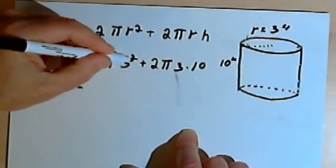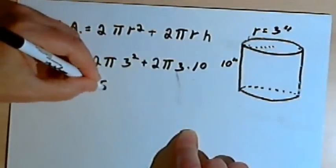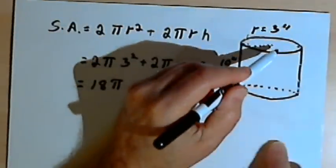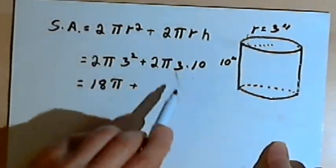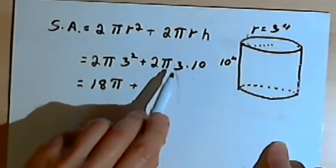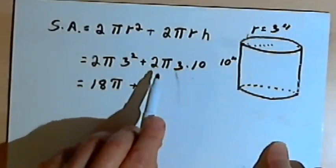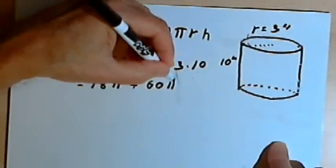So 3 squared is 9, and 2 times 9 is 18. So that's going to be 18 pi. That'll be the area for both the top and the bottom, the two bases. And then I want to add that to 2 pi times 3 times 10. 3 times 10 is 30, and 2 times 30 is 60, so that'll be 60 pi.